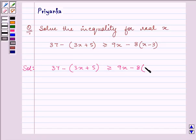minus 8 bracket x minus 3. Now on removing the brackets, we have 37 minus 3x minus 5 is greater than equal to 9x minus 8x plus 24, minus minus is plus.